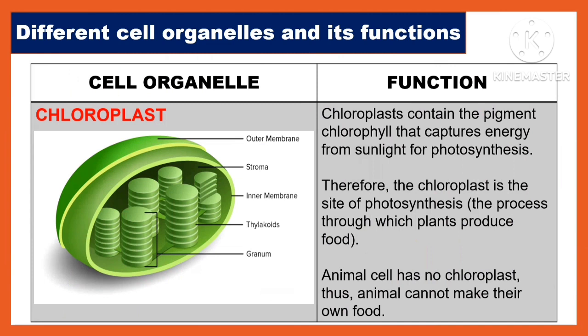Another cell organelle is the chloroplast. Chloroplasts contain the pigment chlorophyll that captures energy from sunlight for photosynthesis. Therefore, the chloroplast is the site of photosynthesis — the process through which plants produce food. Animal cells have no chloroplasts, and thus animals cannot make their own food.